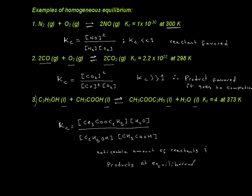To summarize: be able to write the equilibrium expression and realize there is a number associated with it at a given temperature — it is a function of temperature. If Kc is much smaller than 1, you are reactant favored and not going anywhere. If Kc is much larger than 1, there is no reactant left after equilibrium. If Kc is somewhere between 0.01 and 100, you have a nice equilibrium with a noticeable amount of both reactants and products.